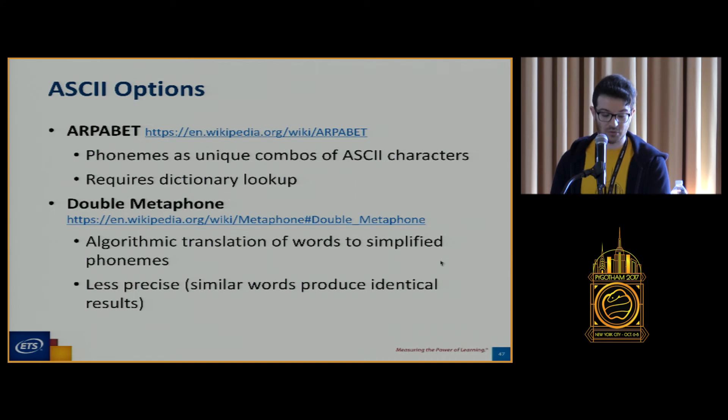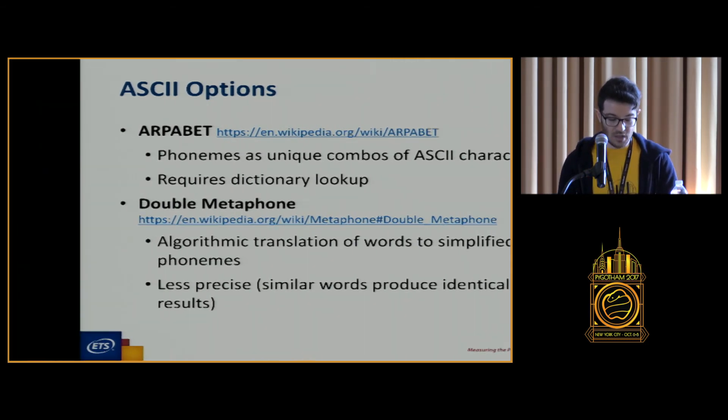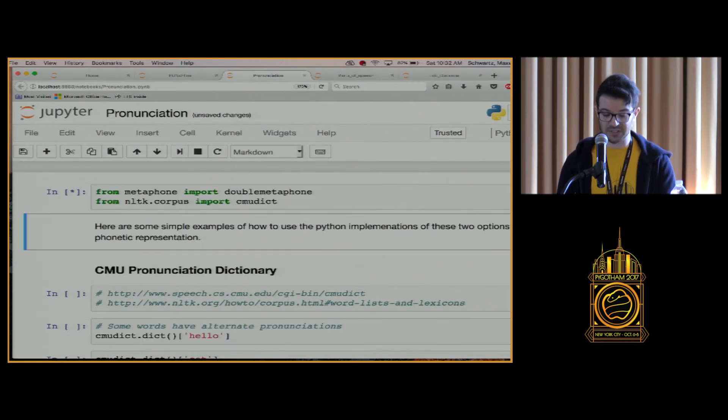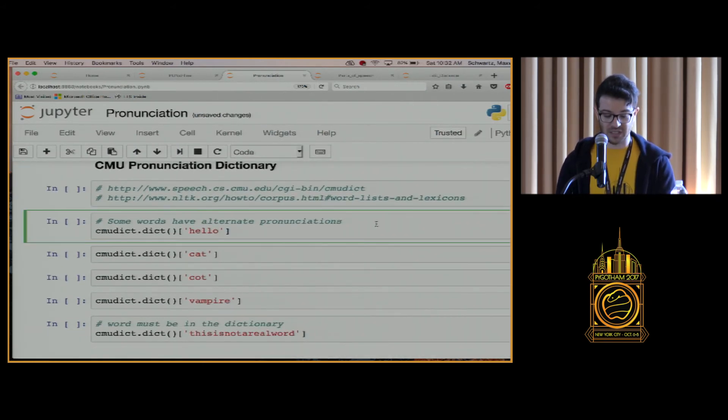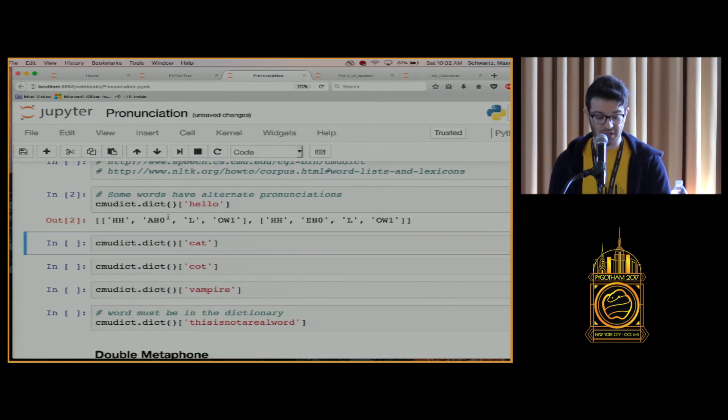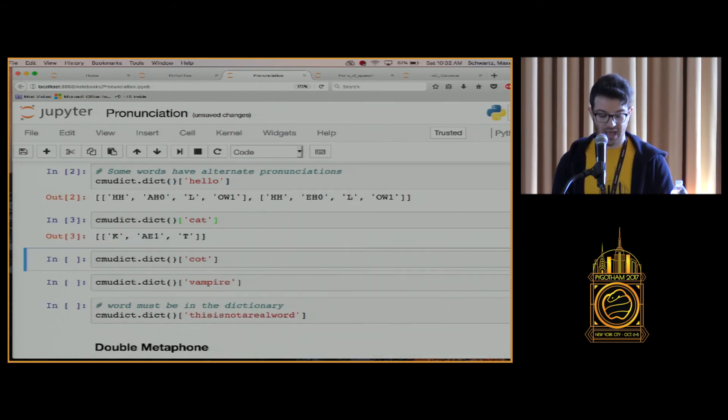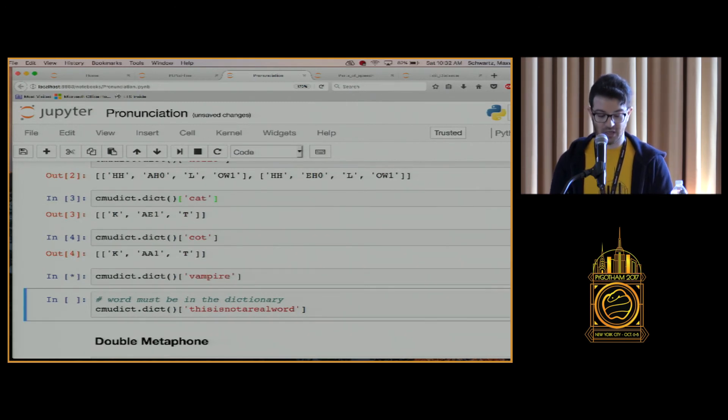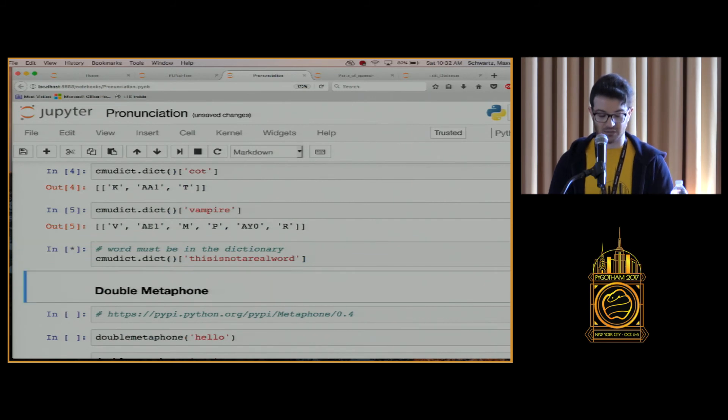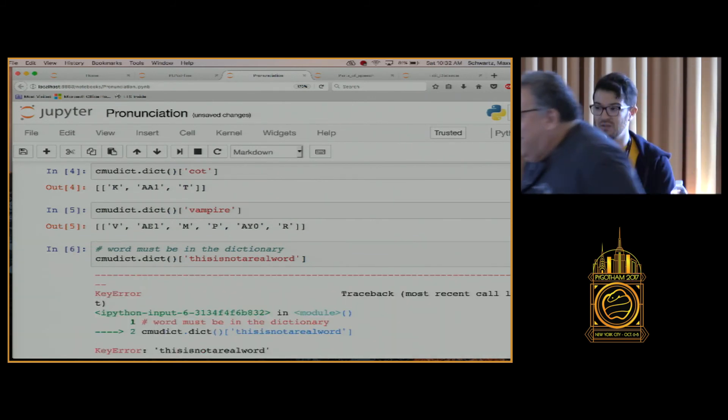An algorithmic version that we can potentially use is called the double metaphor algorithm. A very useful one because you can enter any string and it doesn't have to have it in a dictionary. It is less precise though. Similar words are going to have the same representation and so not necessarily what we want for what we're doing. Phonemes, the actual sounds in the words, are represented as unique combinations of these ASCII characters. The potential issue with this, and we'll see that, is that it requires an actual dictionary lookup. These words have to already have been defined by a human and entered into the dictionary. We're going to be using the Carnegie Mellon University pronunciation dictionary.